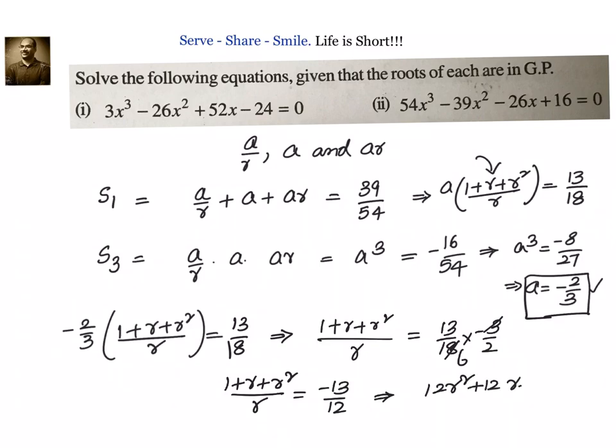+ 12r + 12 equal to -13r. Or can we write it as 12r² + 25r + 12 = 0? Now we need to split the middle term.